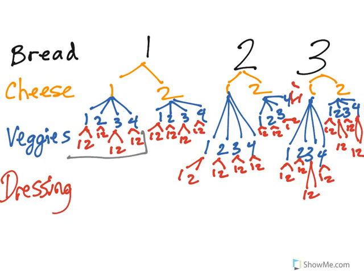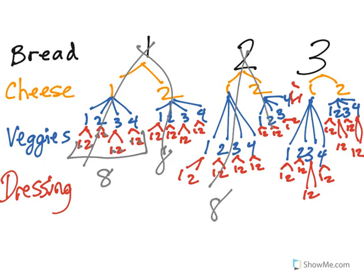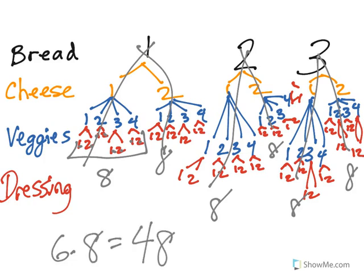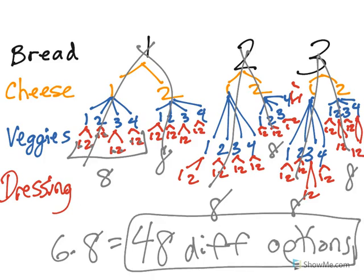So if we look at the base, we have one, two, three, four, five, six, seven, eight options. From every branch, there are eight options, and there are six of those. So six times eight equals 48 different sandwich options if you only use one of each thing.